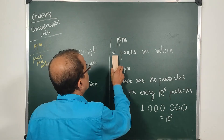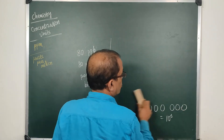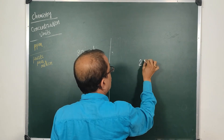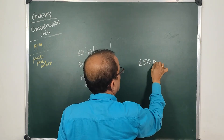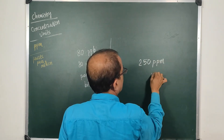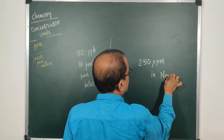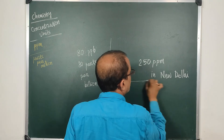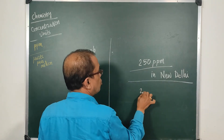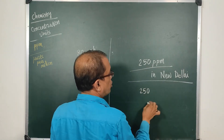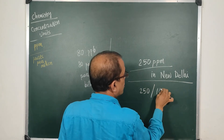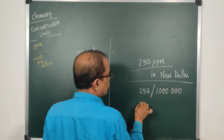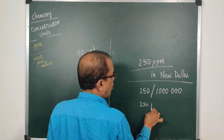You can easily understand when the air pollution index has reached 250 ppm in New Delhi. What does it mean? It means there are 250 particles of air pollutants for every 10 lakh, or every million. So 250 per million — 250 particles per million.